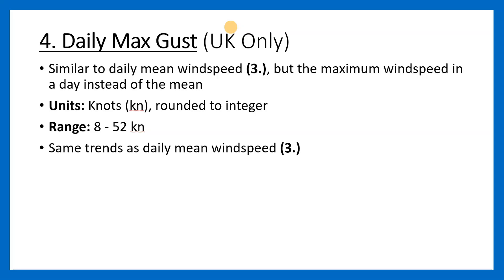The fourth measurement is daily max gust. Note that this is the first measurement only for the UK and not for the international stations. This is extremely similar to the daily mean wind speed, but instead of the mean wind speed, it's the maximum wind speed of that day — we call it the max gust. The units are the same. The range is between 8 and 52 knots, and the trends are the same as the previous measurement.